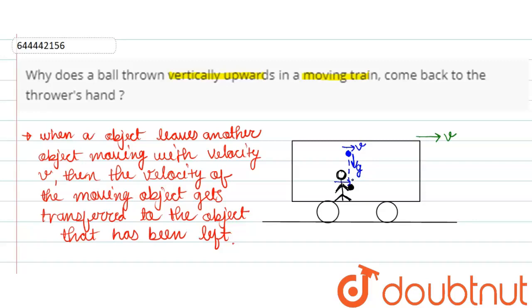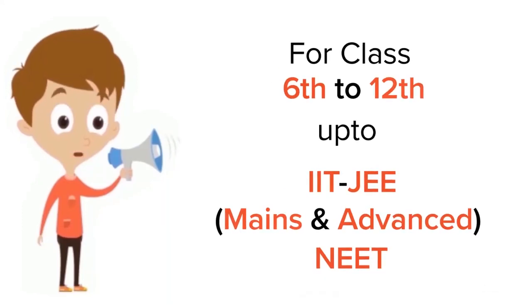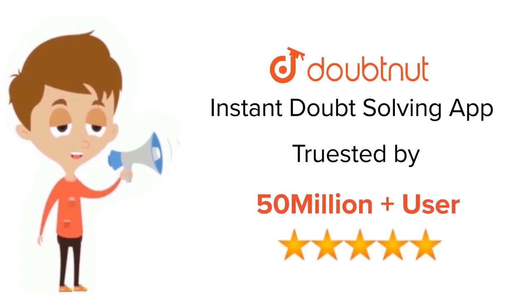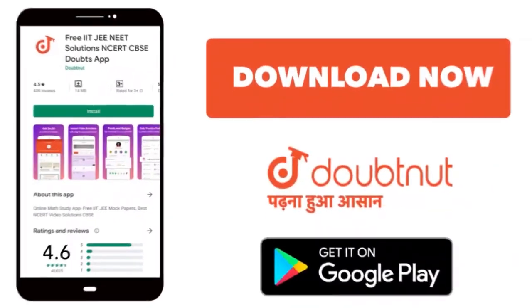Thus, when the ball reaches down, it comes back into the hand of the thrower. Thank you friends. For class 6-12, IIT and NEET level, trusted by more than 5 crore students, download Doubtnut app today.